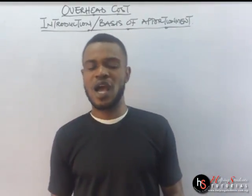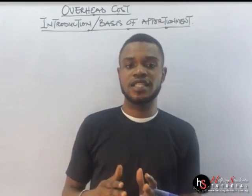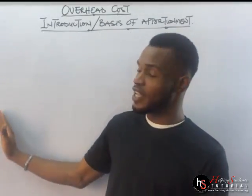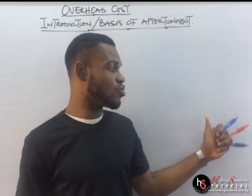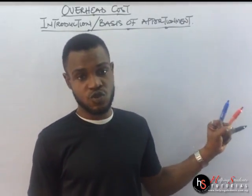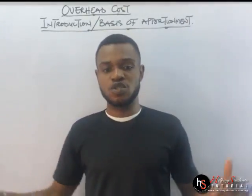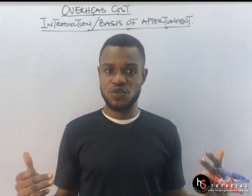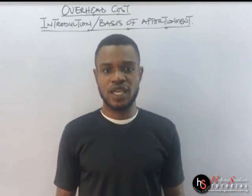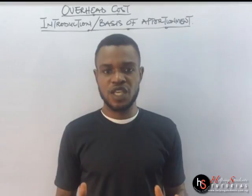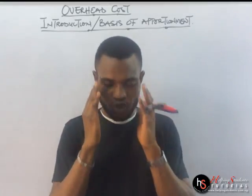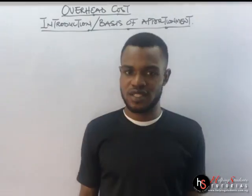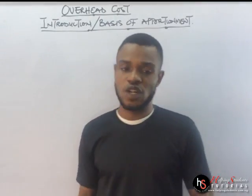Now, it goes this way. We have some overhead cost items, then the basis of apportionment. I'm going to list the overhead cost items and also write down the basis of apportionment. Take note of it and use it to practice. I will even advise you to give it a whole day — give it a whole day for it to get into you so you understand it very well, because you need it.